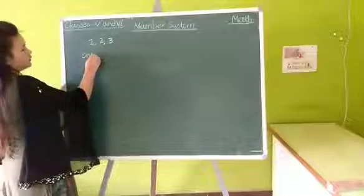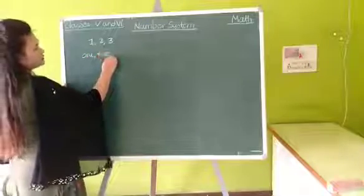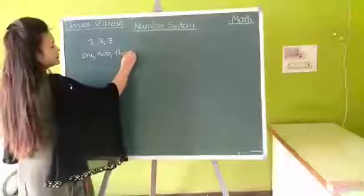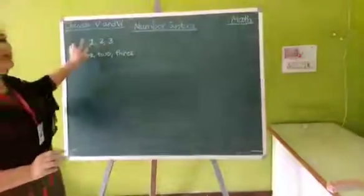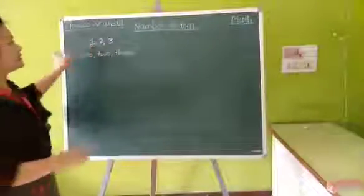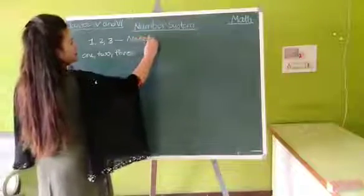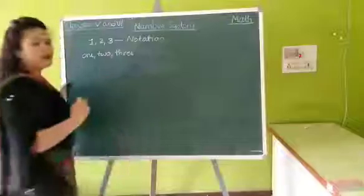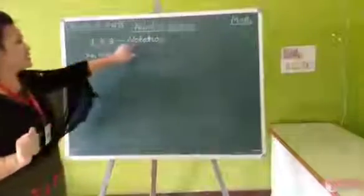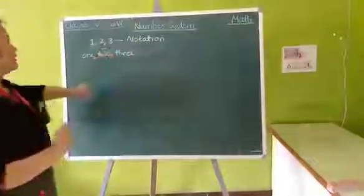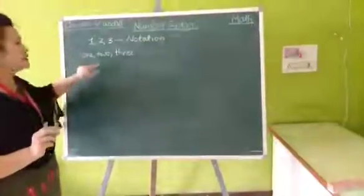1, 2, 3. When we express the numbers in figures, it is known as notation. When we express numbers in figures, and when we express the numbers in words.